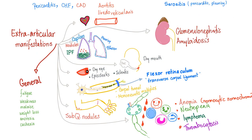Let's review the extra-articular manifestations of Rheumatoid in one minute. We have pericarditis, CHF, coronary artery disease, aortitis, and livedo reticularis — hashtag serositis. Lungs: pleurisy, pleural effusion, nodules, and interstitial pulmonary fibrosis, which is basal in Rheumatoid. Salivary glands: chronic sialadenitis of the major salivary glands. Eyes: dry eyes, episcleritis, and scleritis. Nerve problems: carpal tunnel syndrome affecting the median nerve, and mononeuritis multiplex causing foot drop and wrist drop. Subcutaneous nodules on the extensor surface, also nodules on valves and in the lung. Blood and lymph: anemia — most common morphology is normocytic normochromic. Also neutropenia, lymphoma especially non-Hodgkin's diffuse large B-cell lymphoma, and thrombocytosis.